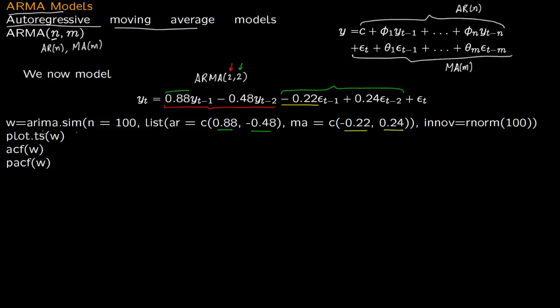This is the command for simulation: arima.sim with n=100 generates a vector of size 100. This w is a vector containing values w₁, w₂, w₃, etc. We plot these values and connect them using plot.ts(w), where ts stands for time series.